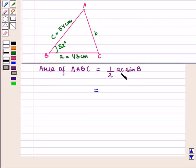If we put the values of A, C and angle B, we get 1/2 × 43 × 54 × sin of 52 degrees which is equal to 43 × 27 × sin of 52 degrees.